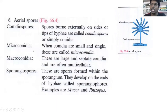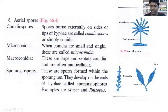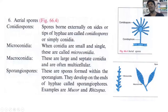Microconidia means when a single conidium is small and single — these are called microconidia. In macroconidia, they are of larger size. These are large and septate conidia, often multicellular. Macroconidia contain septums and they are connected to the hyphae.